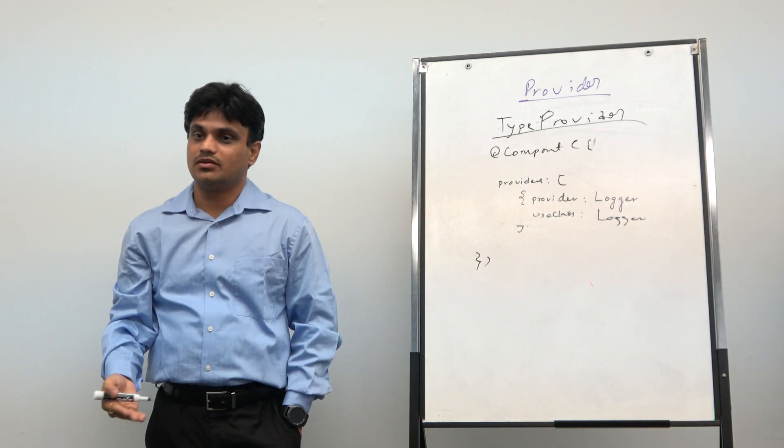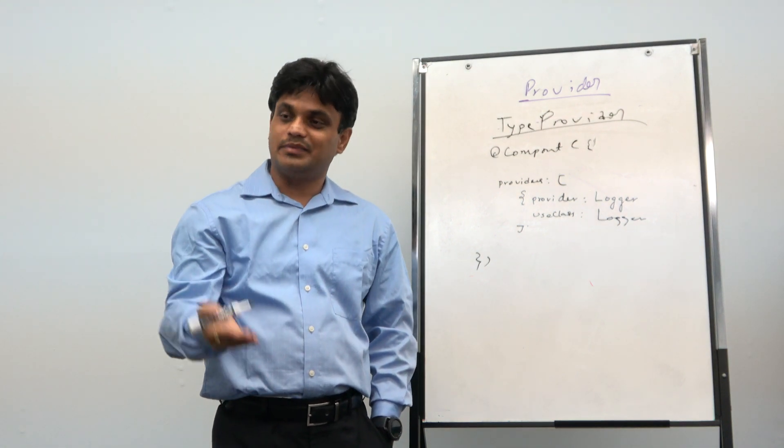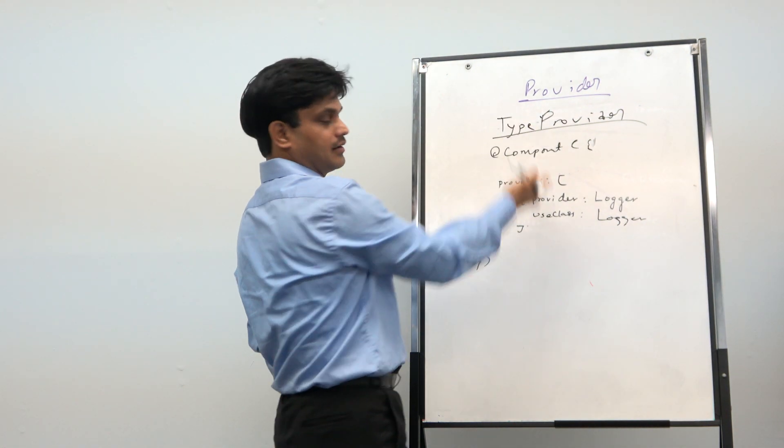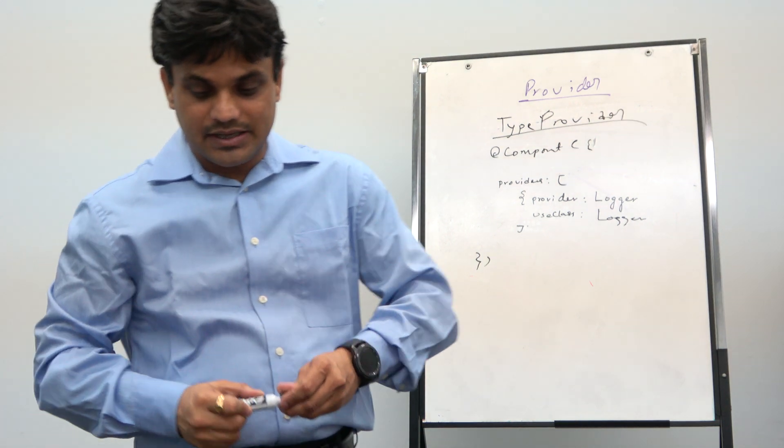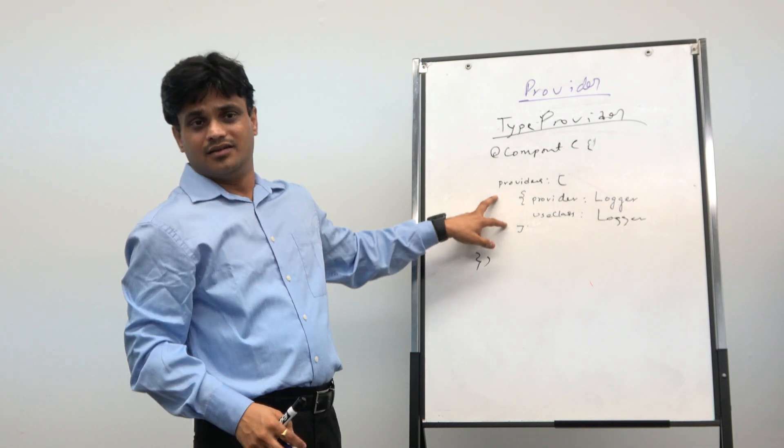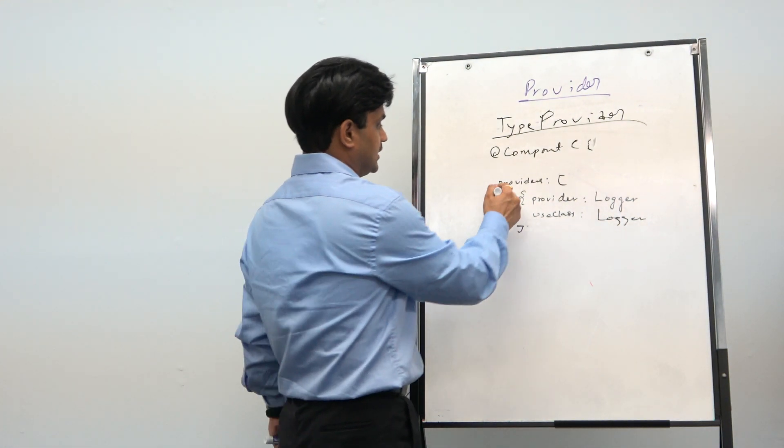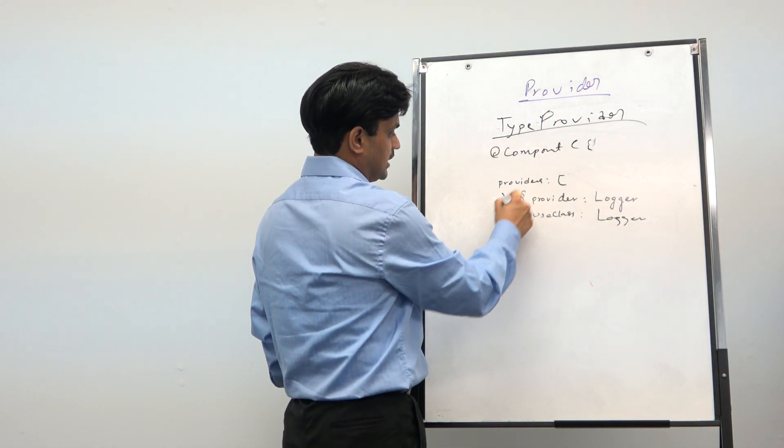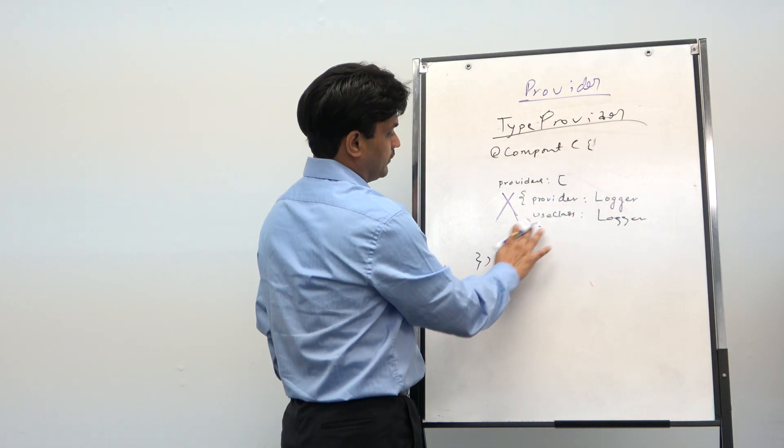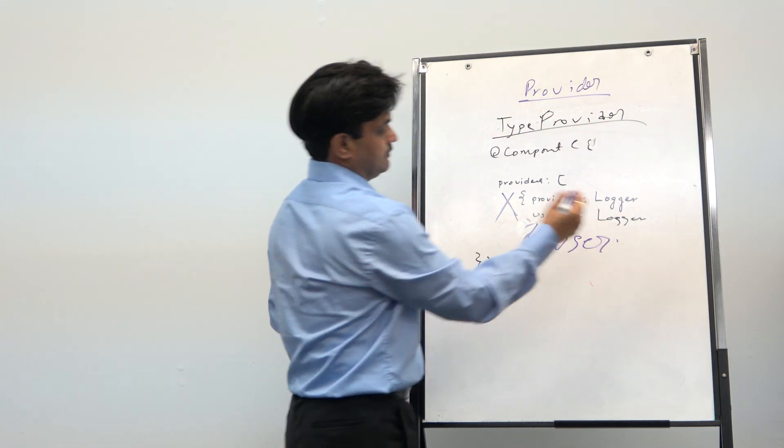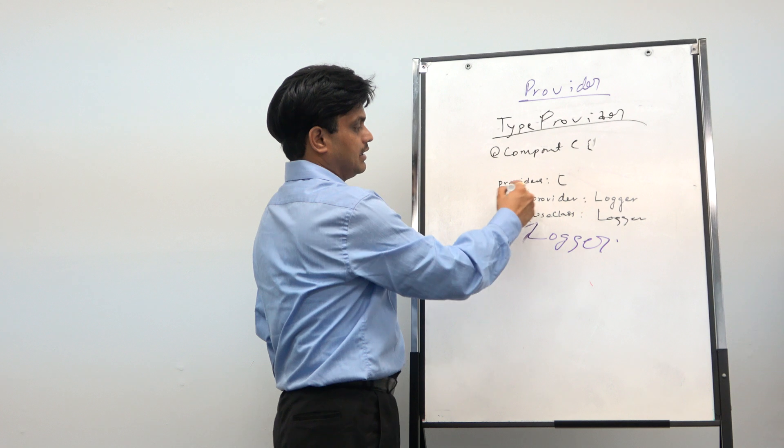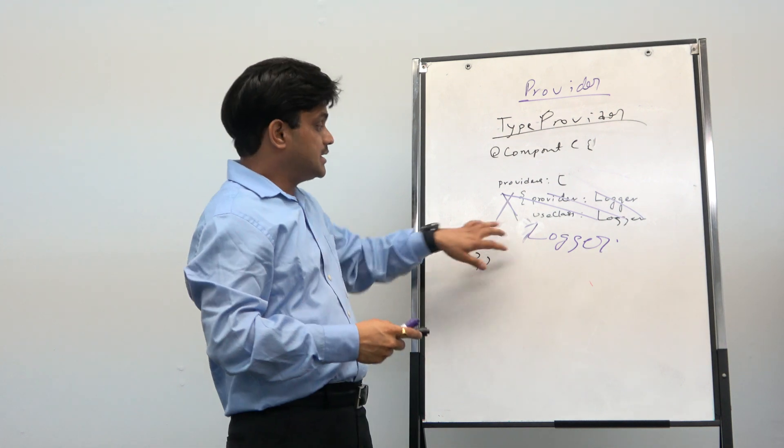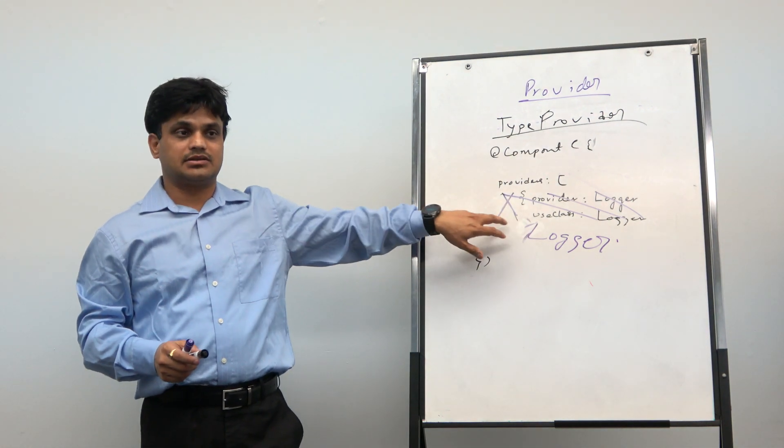But when you end up doing like this, where you are saying use DI token as the class name, and then use class also that same class, then there is a shortcut for this. And that shortcut is nothing but the type provider. What Angular says is if you end up writing this code, is that not silly? Like to repeat the same thing. What they say is rather than doing this, what you will do is just put the name of the logger. That's it. Rather than doing all of this, I'll just in this array have logger in that array. And logger is nothing but the class name.